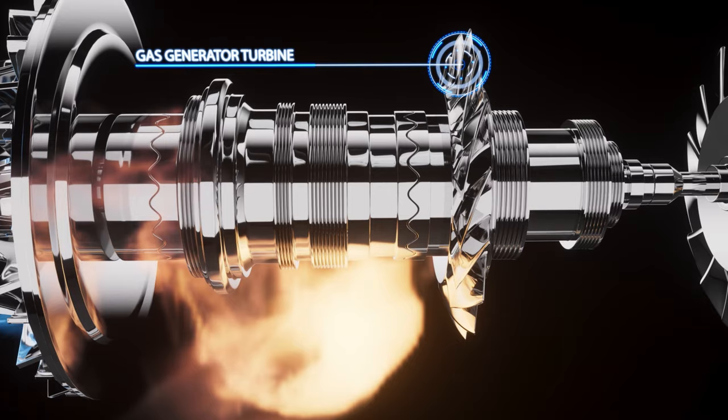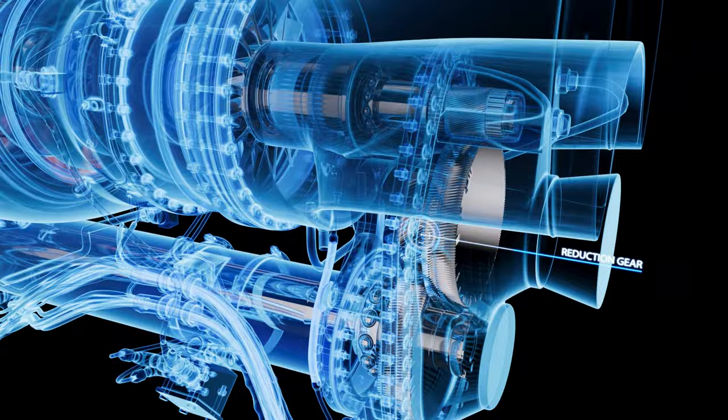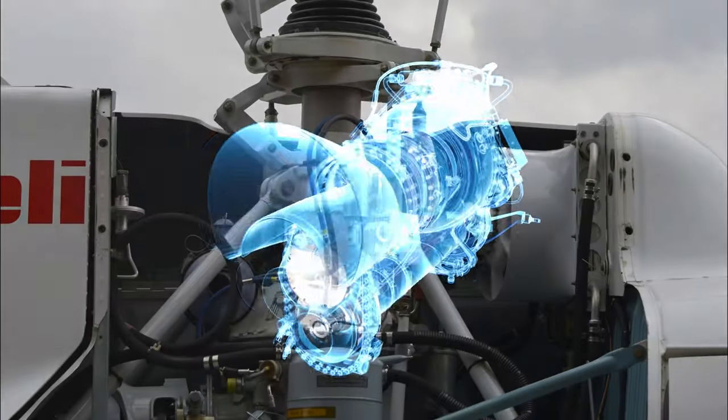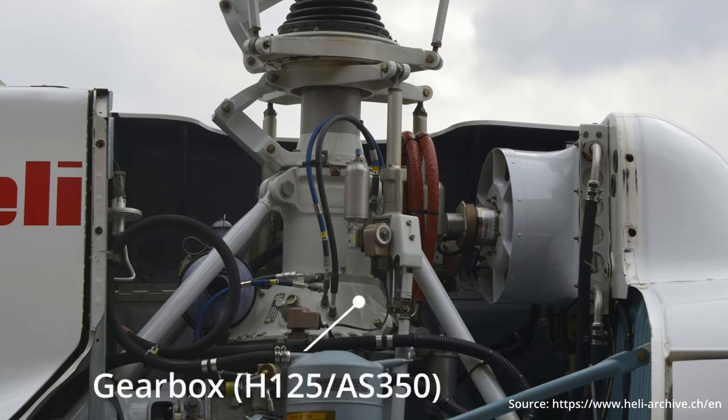The Arial 2 engine has a built-in reduction gear to reduce the engine speed. However, to further reduce the speed and transmit the torque of the engine, another separate gearbox is required.